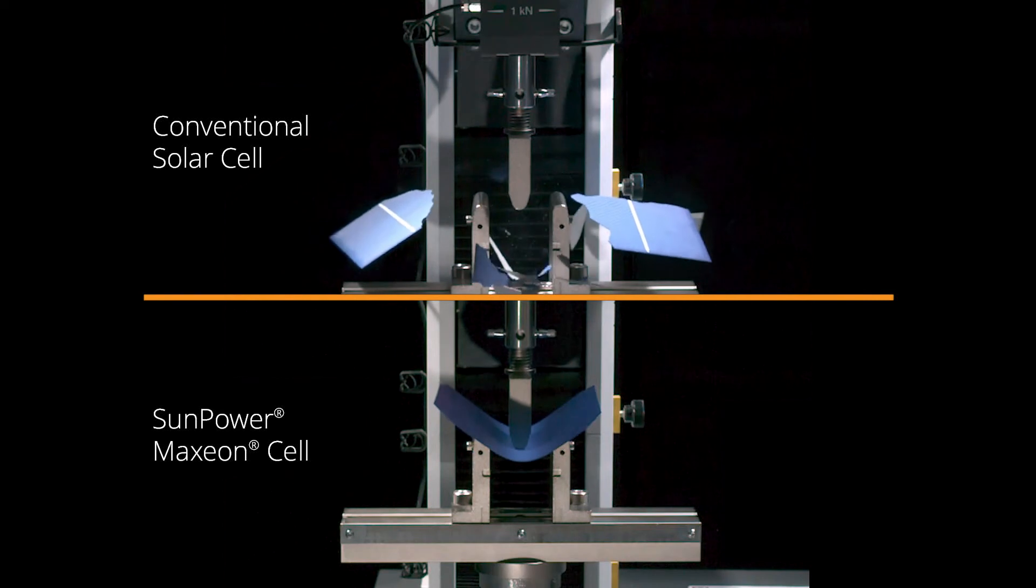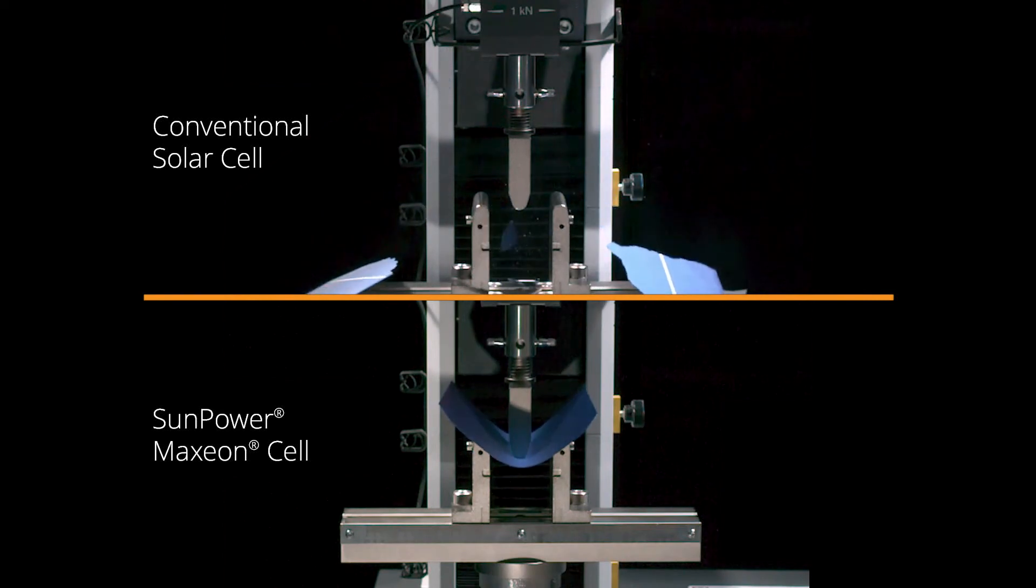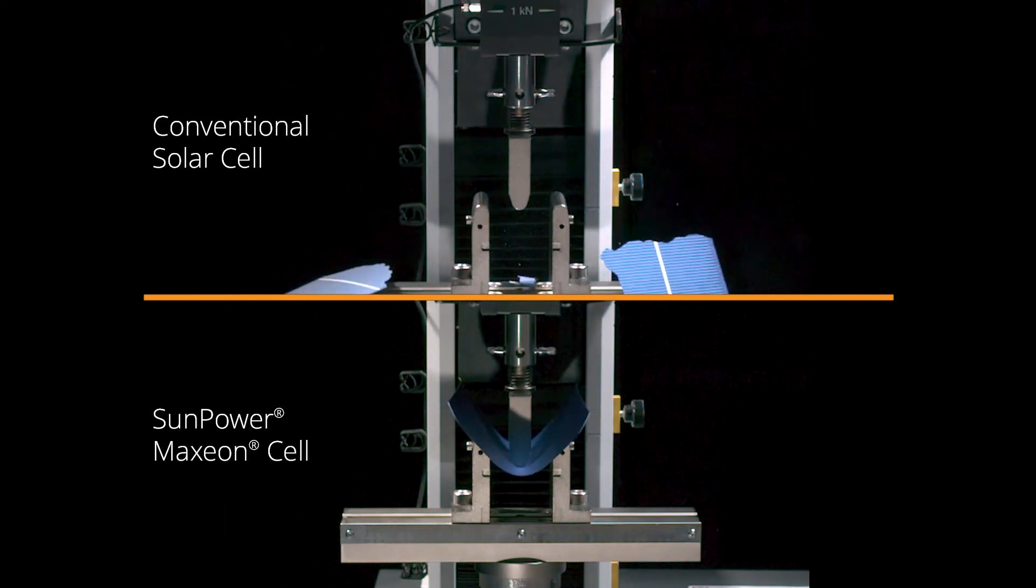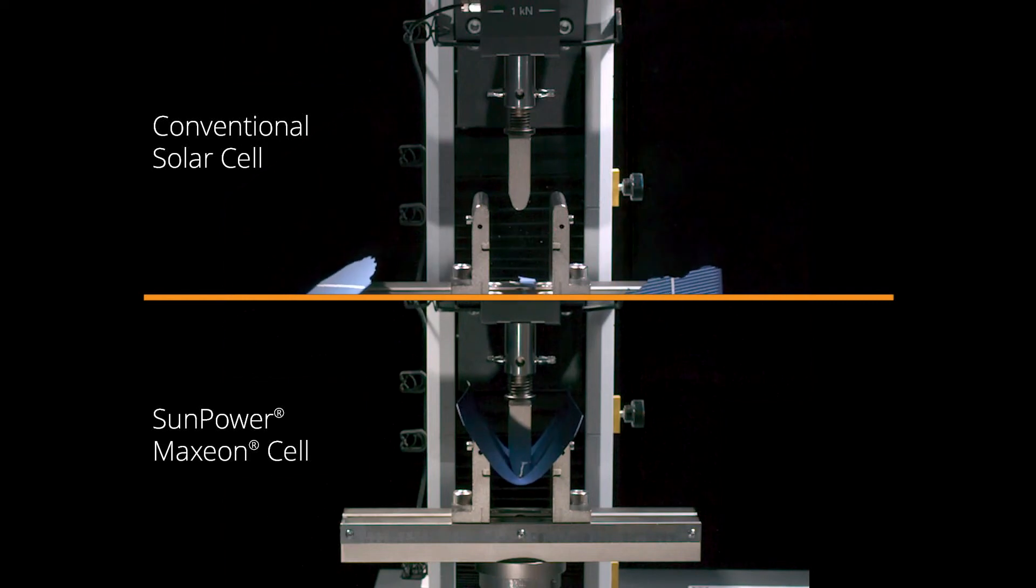Where others break, Maxion bends, ensuring your flow of solar energy continues uninterrupted to maximize your savings.